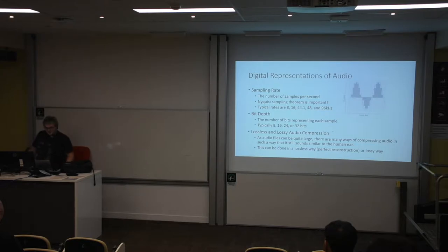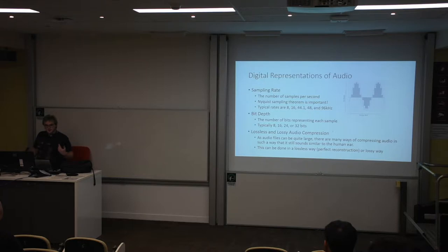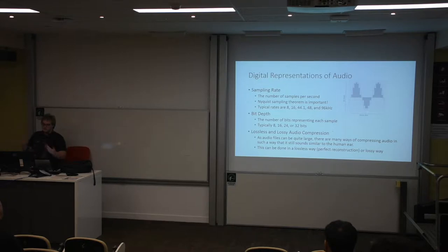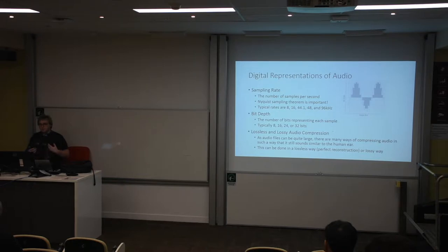44.1 kHz is an interesting sampling rate. It's an artifact of 60 and 50 Hz television frequencies — 44.1 kHz allows you to break down a full screen at either 60 Hz or 50 Hz and put an audio track on top. So 44.1 kHz was historically very important for ensuring anyone could play back audio synchronized with a video track.